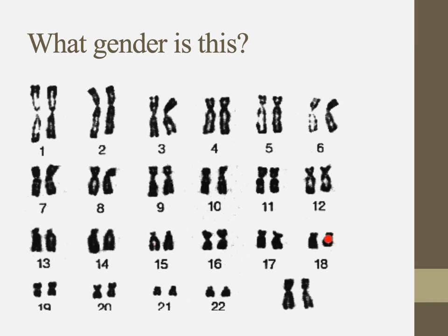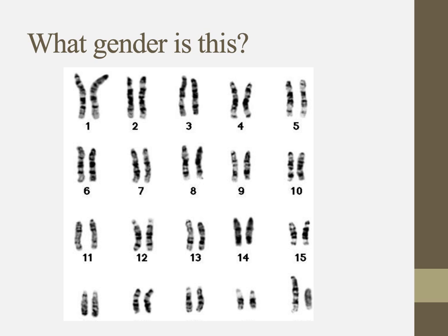The first 22 chromosomes are the autosomes. I want to look at the 23rd pair — that sex chromosome. I can see that I've got an X and an X, so this is a female. A male is going to look more like this: in that 23rd pair, here's the X — it's just not duplicated — and I can tell this is a Y because the Y chromosome is much smaller. So this is an X and this is a Y; Y chromosomes are very much smaller.